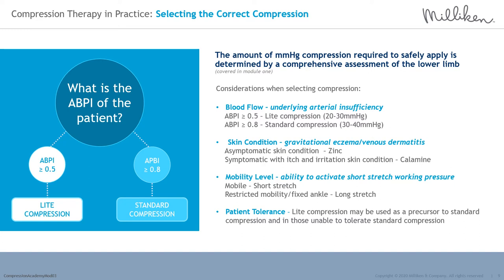Standard compression is indicated for patients with an ABPI value equal to or greater than 0.8 to less than 1.3, or those with venous insufficiency with mild or no underlying arterial insufficiency. Compression therapy is measured in millimetres of mercury pressure. Light compression falls between 20–30 mmHg and standard compression falls between 30–40 mmHg. The patient's skin condition, activity level and tolerance of compression should also be evaluated when selecting the appropriate therapy.